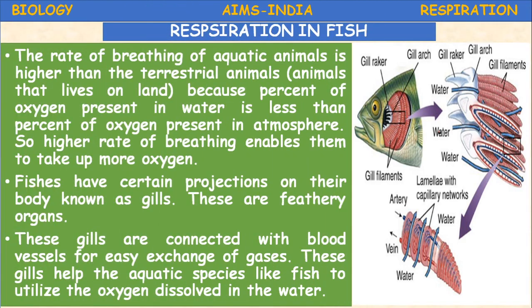Next, branchial respiration - respiration in fish. The availability of oxygen is different for aquatic animals. Oxygen is freely available for terrestrial organisms, but the source of oxygen for aquatic animals is dissolved oxygen. The rate of breathing of aquatic animals is higher than terrestrial animals because the percentage of oxygen present in water is less than in the atmosphere, so aquatic animals require a higher rate of breathing to take up more oxygen.